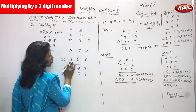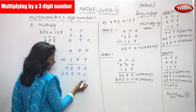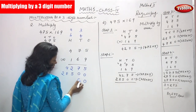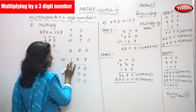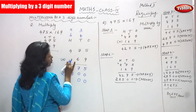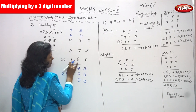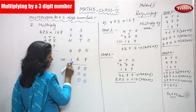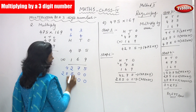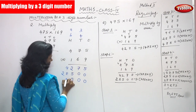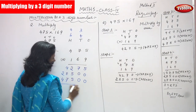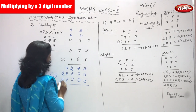Now I am moving on to the 100's place value. I have put 0 in the 1's place and 0 in the 10's place. I am going to multiply 475 by 1. The 100's place value is 1. So 1 into 5 is 5, 1 into 7 is 7, and 1 into 4 is 4. Now I am going to add everything.